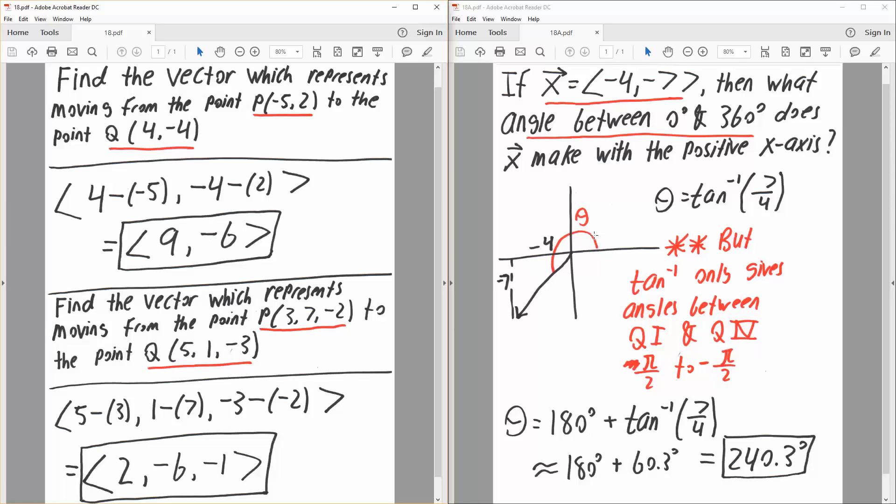We want to find this angle right here from here all the way to here. If we say tan inverse 7 over 4, tan inverse only gives angles between quadrant 1 and quadrant 4, only goes from π/2 to -π/2. That would be about -90 degrees to 90 degrees.